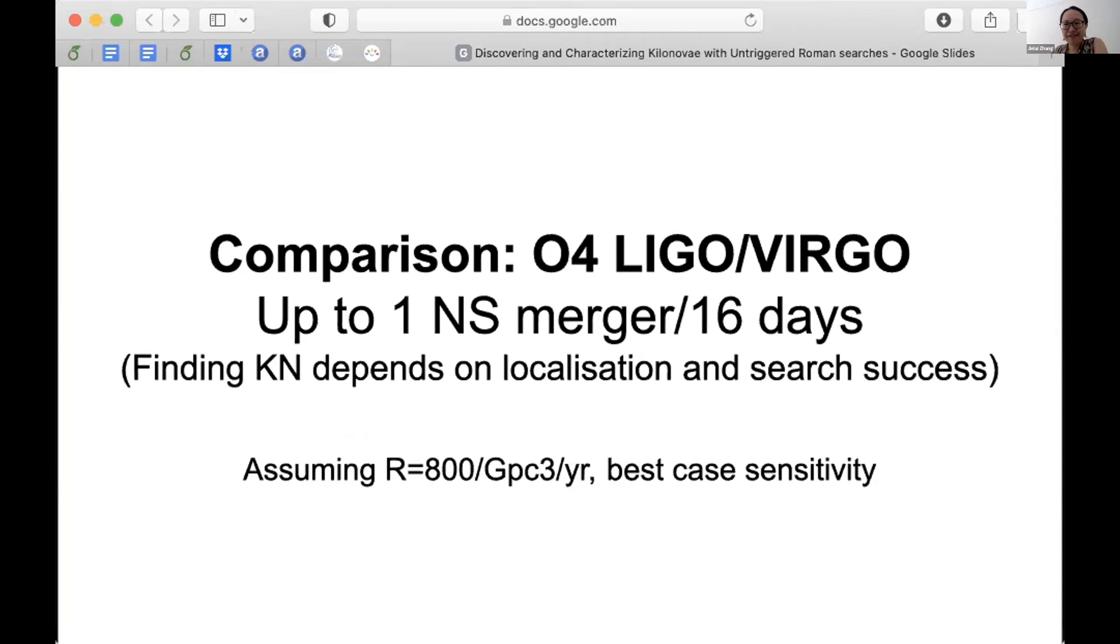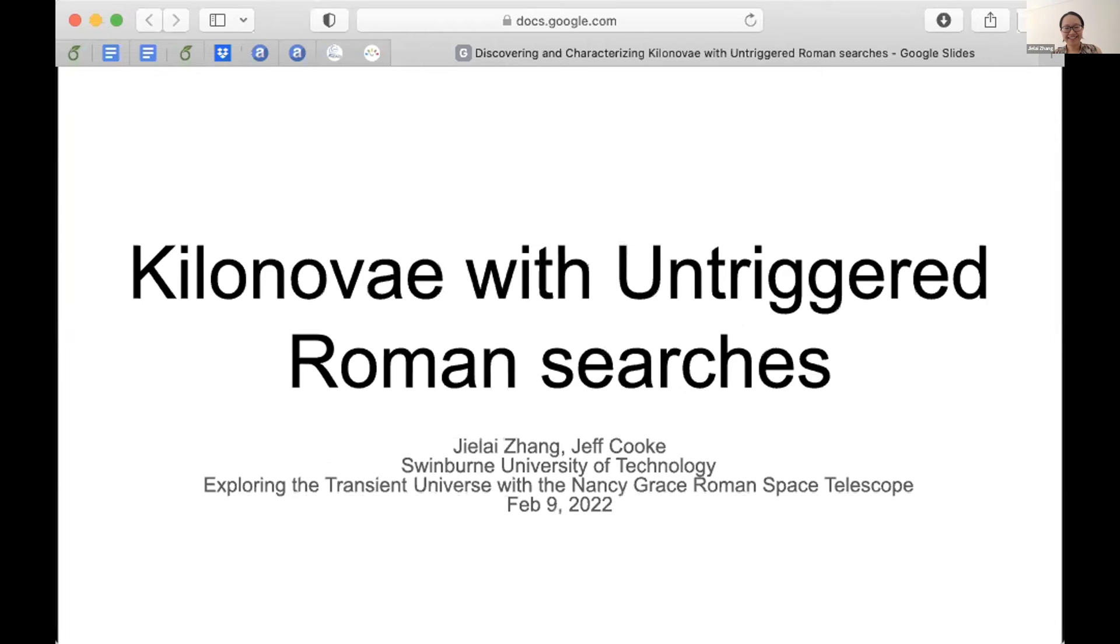For comparison, this is very comparable to the typical way of finding kilonova with gravitational wave triggers, which using the same rate, this optimistic rate finds up to one neutron star merger event every 16 days. But of course, to find a kilonova with this, it depends on how well it's localized and also how successful the search is with optical and infrared follow up. And so far, we've only been able to do this for one event. All right. And that's my talk. I hope I've convinced you that we should go for the strategy to find kilonova using an untriggered search method. Thanks.